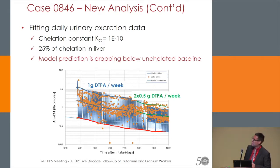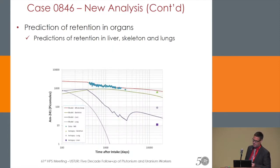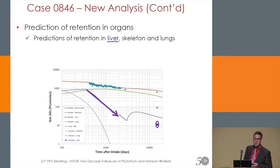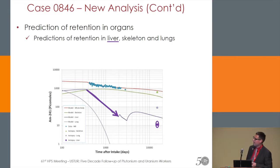I show this model because it also fits the whole body retention data at the same time — it describes both whole body retention and urinary excretion. Looking at the predictions for retention in liver, skeleton, and lungs: for the liver, you see it steeply goes down, which is expected because chelation takes place in liver. The autopsy data from USTUR are in the right direction. When the therapy stops, the liver starts to get refilled again — so the model is doing what we expect.